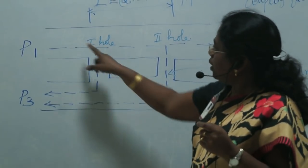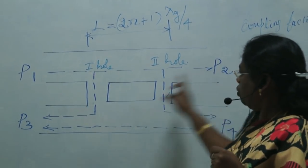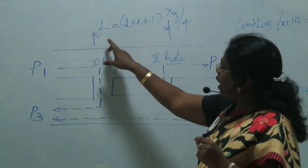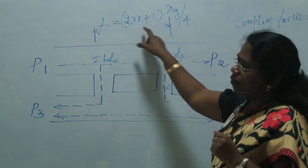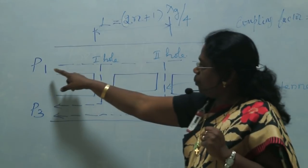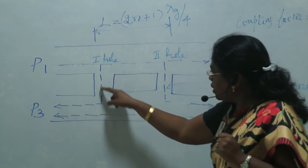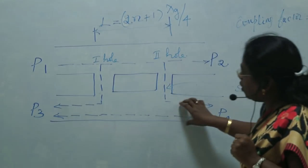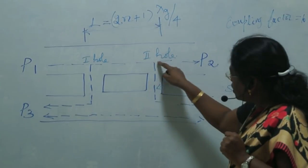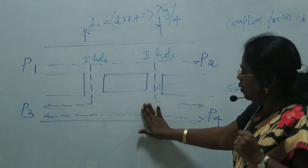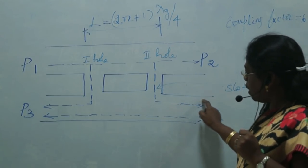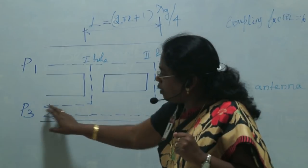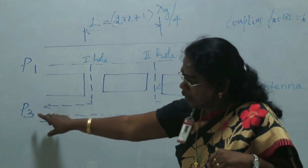We are now going to look at the two-hole coupler, as shown in the diagram. This is port 1, port 2, port 3, and port 4. This is the first hole and this is the second hole. The distance between the two holes is l = (2n+1) × λg/4, where n is any positive integer. Whenever power flows through port 1, it passes through the holes into the secondary waveguide. Through both holes, the forwarded waves flowing in the secondary waveguide are additive in phase.